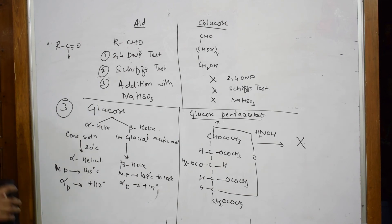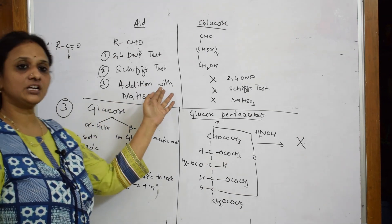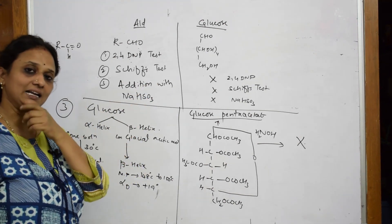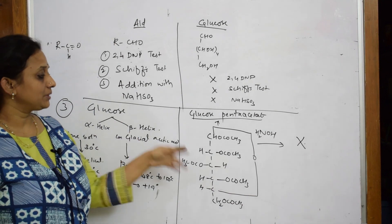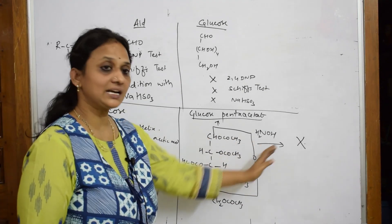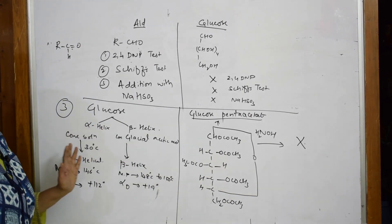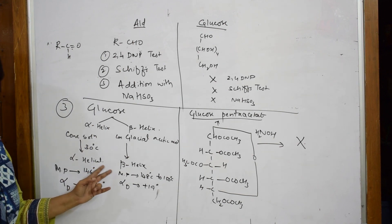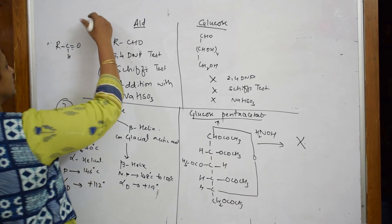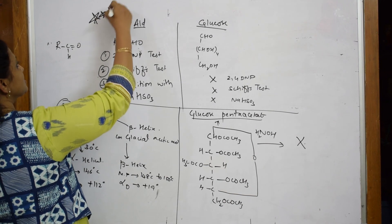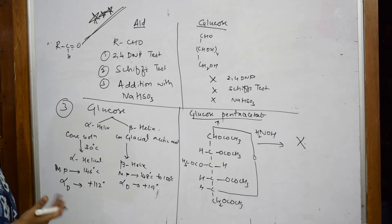To summarize the three points: because of the cyclic structure, glucose does not respond to the characteristic tests of aldehydes (2,4-DNP, Schiff's); it does not react with hydroxylamine; and because of the cyclic structure it exists in two forms — alpha and beta — showing optical rotation. This is a very important question. Please note it — the same question is repeated as 'reactions not shown by the open chain molecule.'